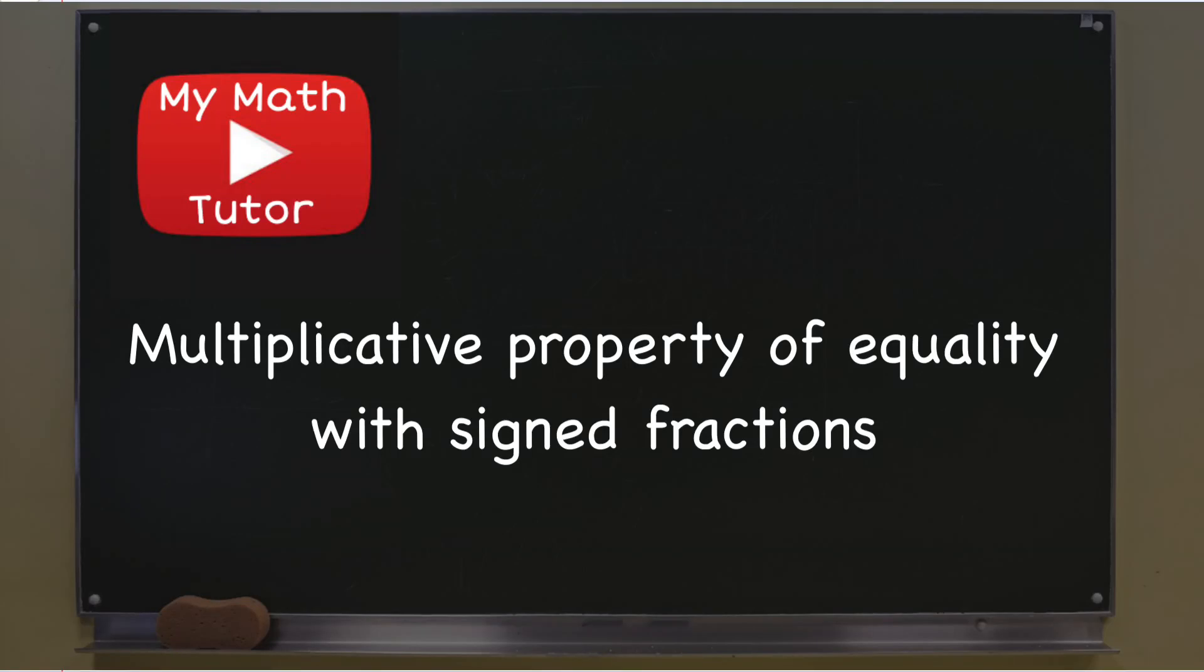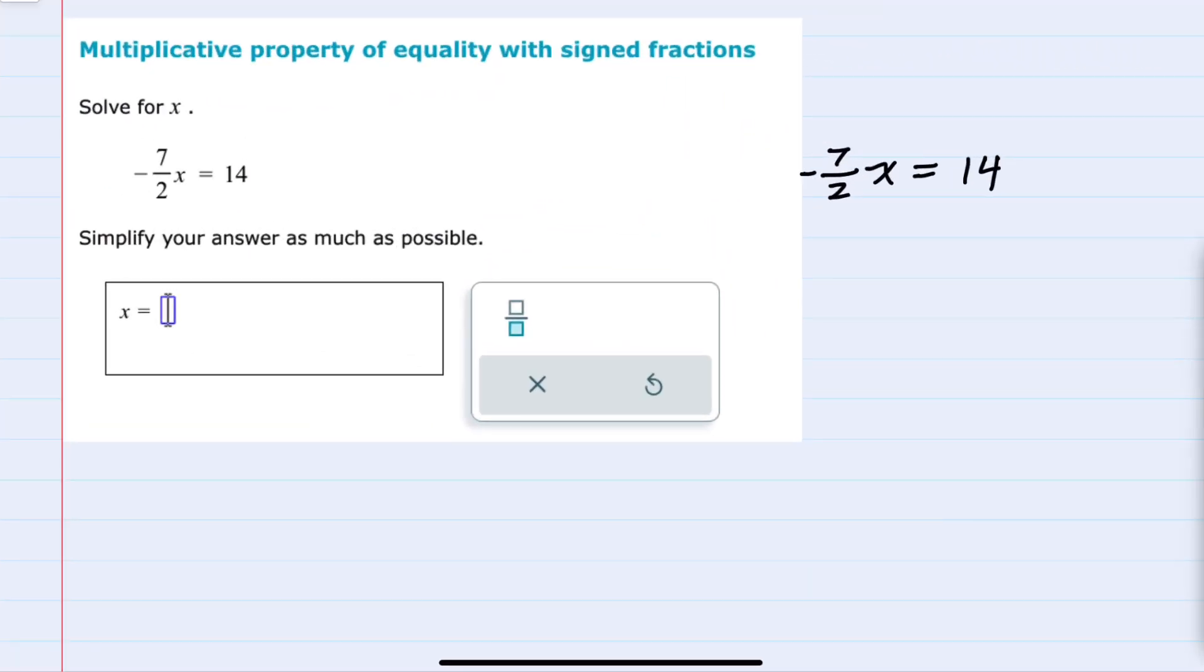In this video I'll be helping you with the Alex problem type called Multiplicative Property of Equality with Signed Fractions. In this example we're asked to solve for x where negative 7 halves x equals 14.